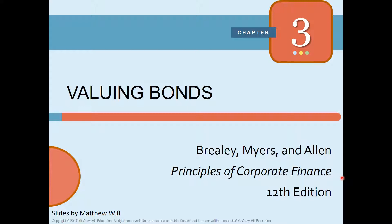Let's start with Chapter 3 — valuing bonds. A small background first: investment in new plant and equipment requires money, often a lot of money. Sometimes firms can retain and accumulate earnings to cover the cost of investment, but often they need to raise extra cash from investors. If they choose not to sell additional shares of common stock, the cash has to come from borrowing. If cash is needed for only a short while, firms may borrow from a bank. If they need cash for long-term investments, they issue bonds, which are simply long-term loans. Companies are not the only bond issuers — municipalities also raise money by selling bonds.